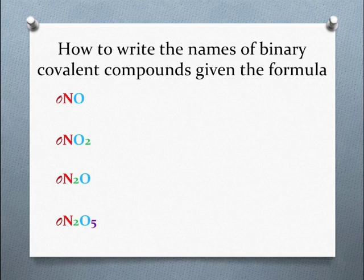Here's some practice using the rules for naming binary covalent compounds. NO is nitrogen monoxide, because we don't use the mono prefix for the first element, and there's only one oxygen on the second element.